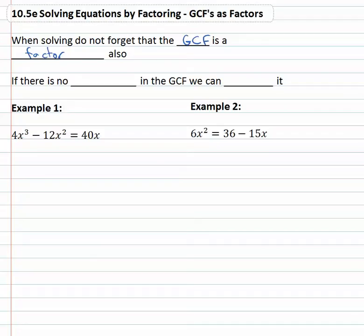Now, the only exception is if there's no variable in the GCF, we can technically ignore it. Because if maybe five is the GCF, five is never going to equal zero. Five x could, but not just five. So if there's no variable in the GCF, we'll ignore the GCF.